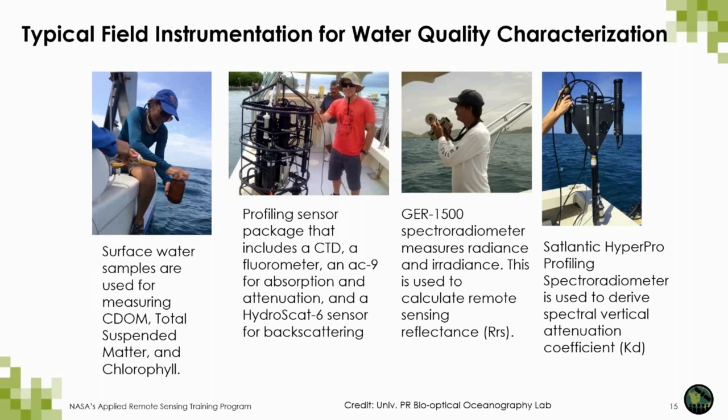The spectroradiometer, such as the GER-1500, measures radiance and irradiance at the water surface and at the sky to calculate remote sensing reflectance. Another instrument widely used in the ocean color community is the HyperPro, which is another spectroradiometer but is lowered at different depths to calculate the vertical attenuation coefficient.